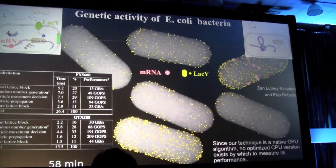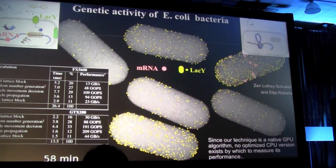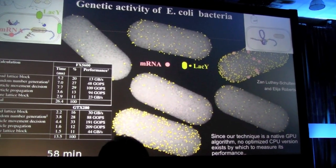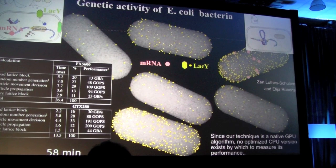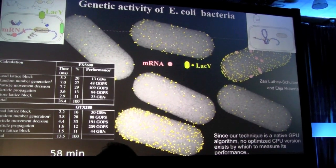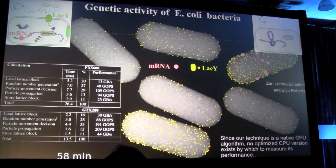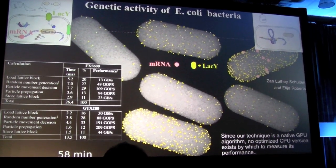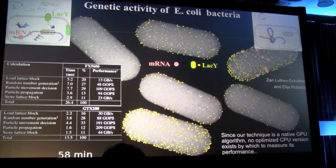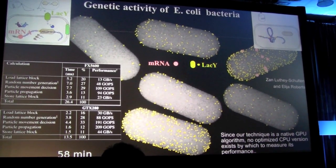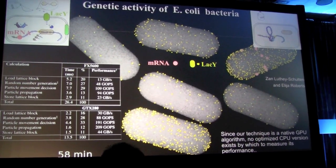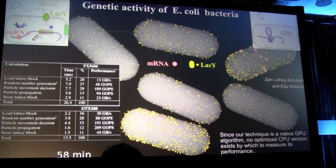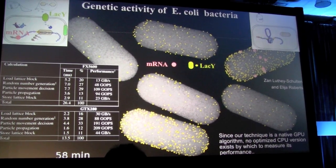The lactose molecules tell the cell there are some delicious lactose around, and the cell now genetically begins to program itself to make proteins that import the lactose into the cell and catalytically degrade it into components that the cell can use.